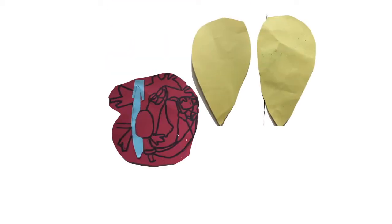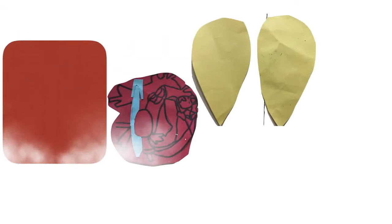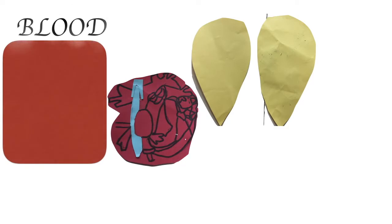The circulatory system. Have you ever heard of the circulatory system? It includes the heart, lungs, arteries, veins, and the blood itself.